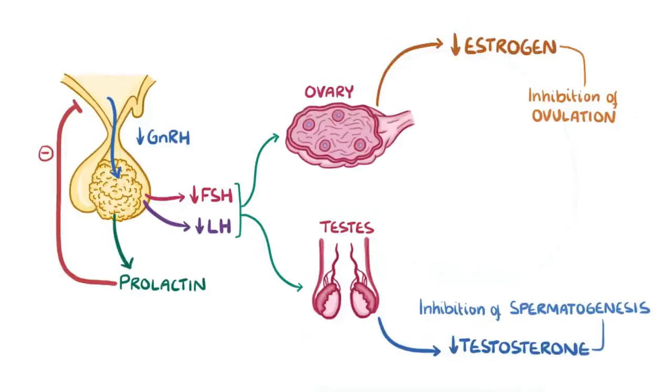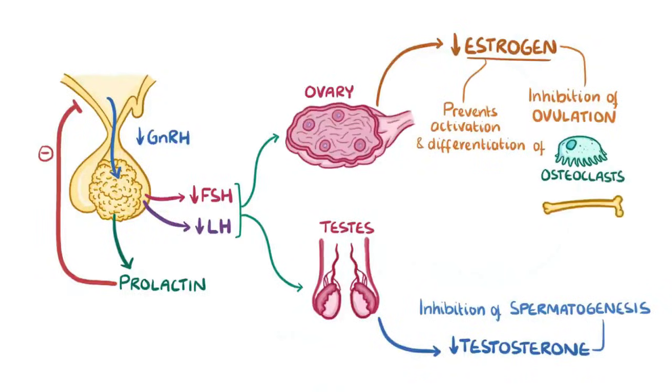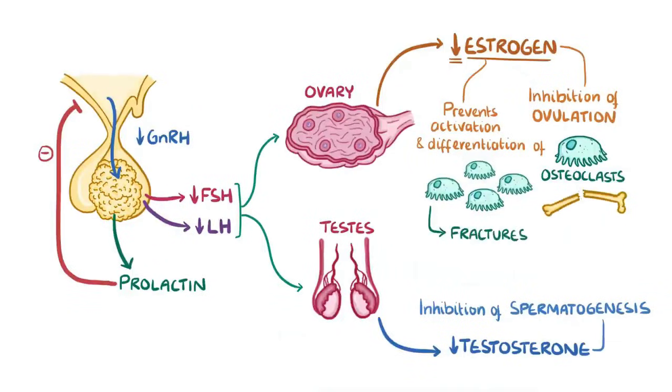In women, estrogen is also really important, because it prevents the activation and differentiation of certain bone cells called osteoclasts. Osteoclasts normally break down bones and release the calcium into the blood. So, with decreased estrogen levels, osteoclasts are free to proliferate, and therefore, women with prolactinomas are at increased risk of fractures and osteoporosis.